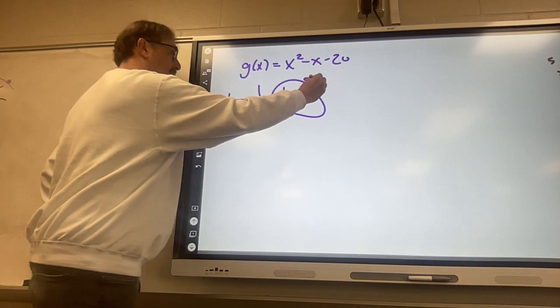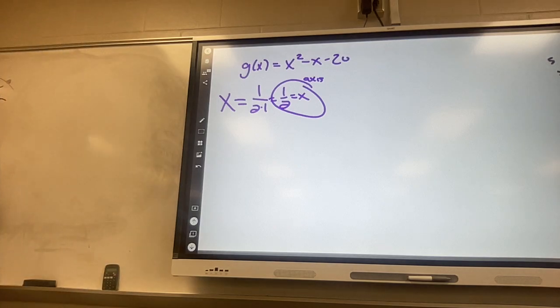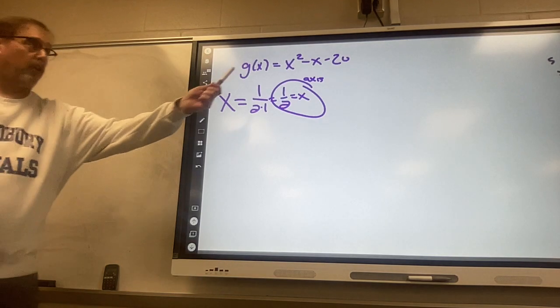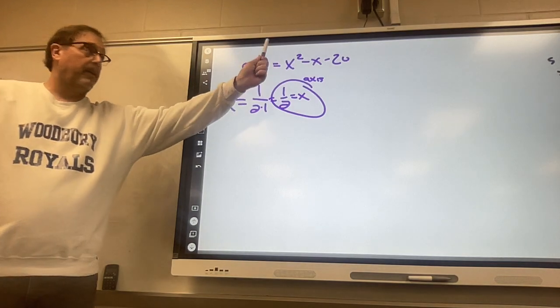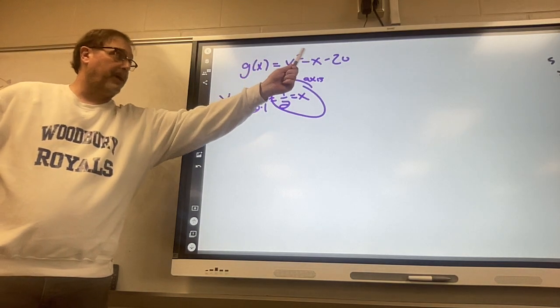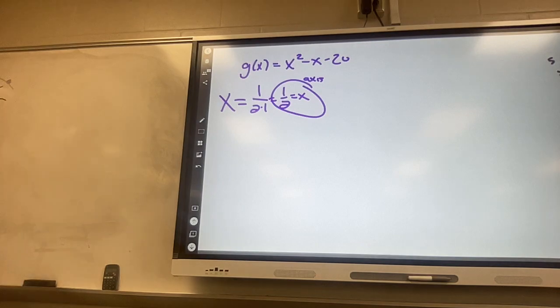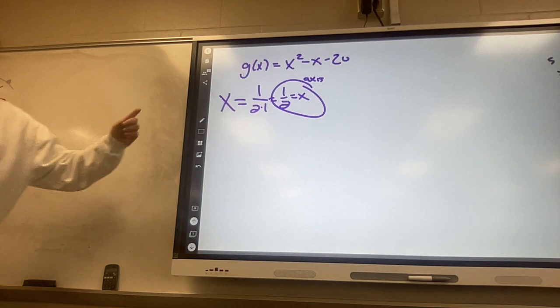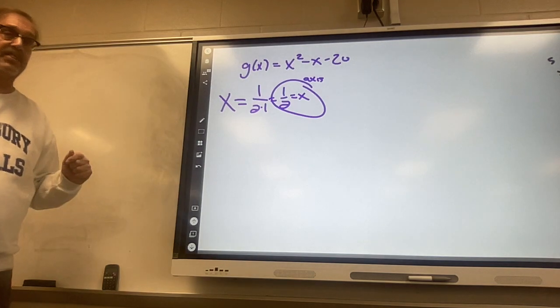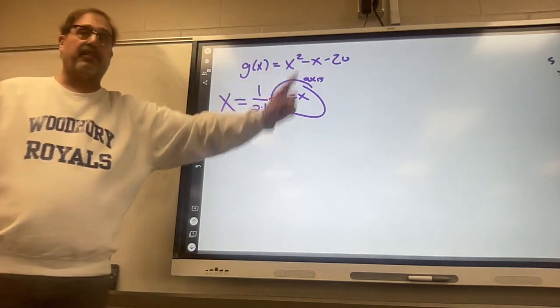Anyone who wasn't here could go 0.5 squared minus 0.5 minus 20. Those that were here and those that were gone, I'll show you that little calculator trick in a minute. Those that were here put 0.5 storage in x and then go x squared minus x minus 20.